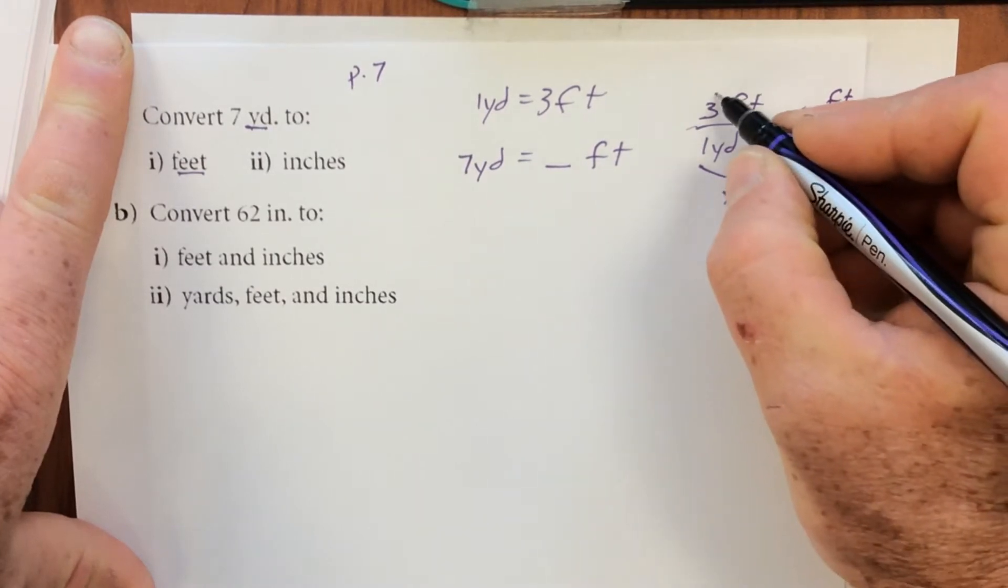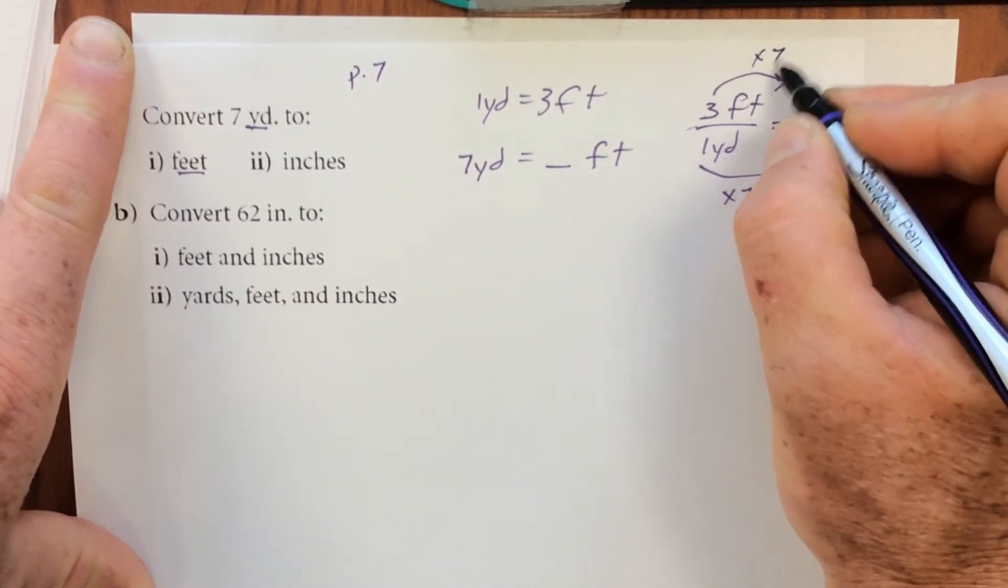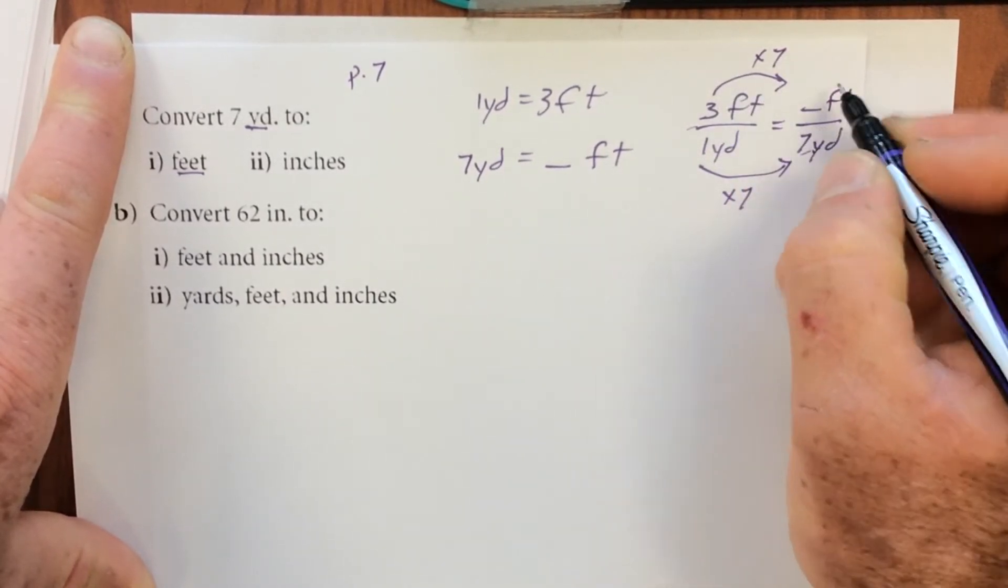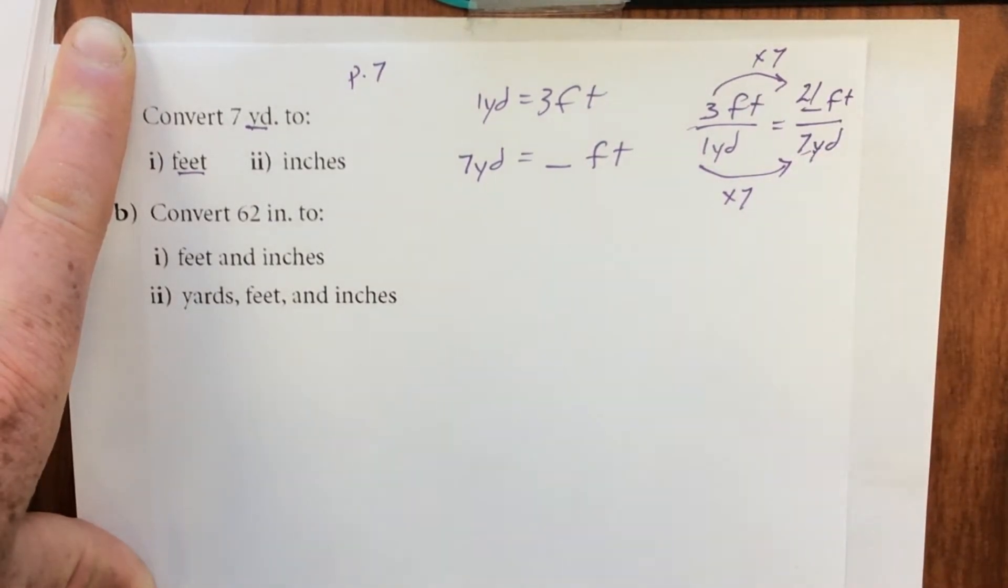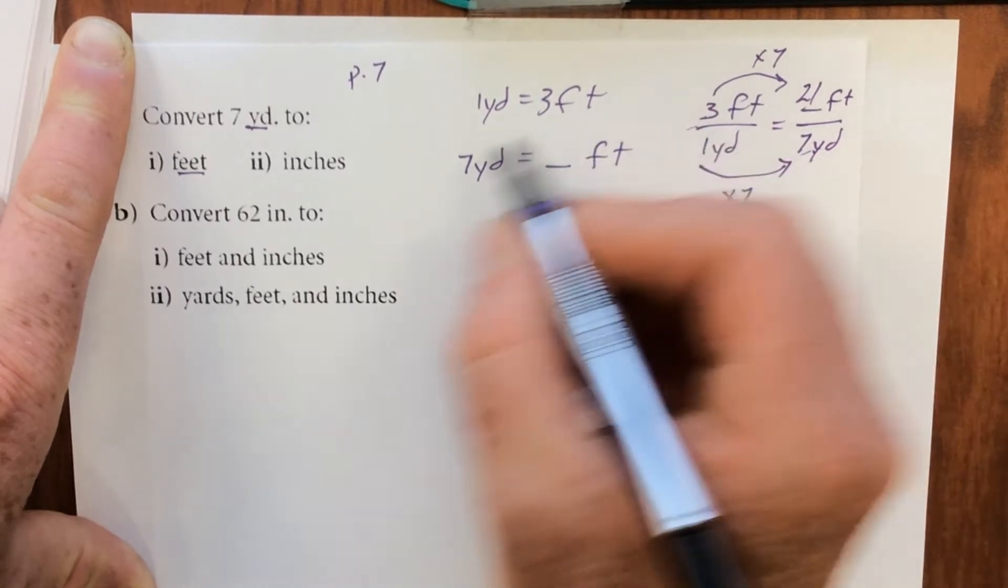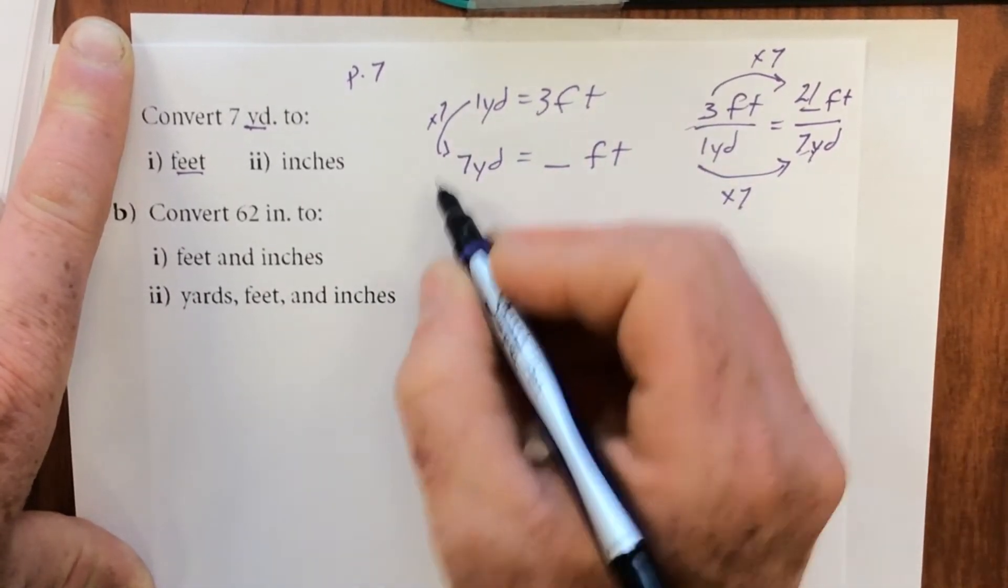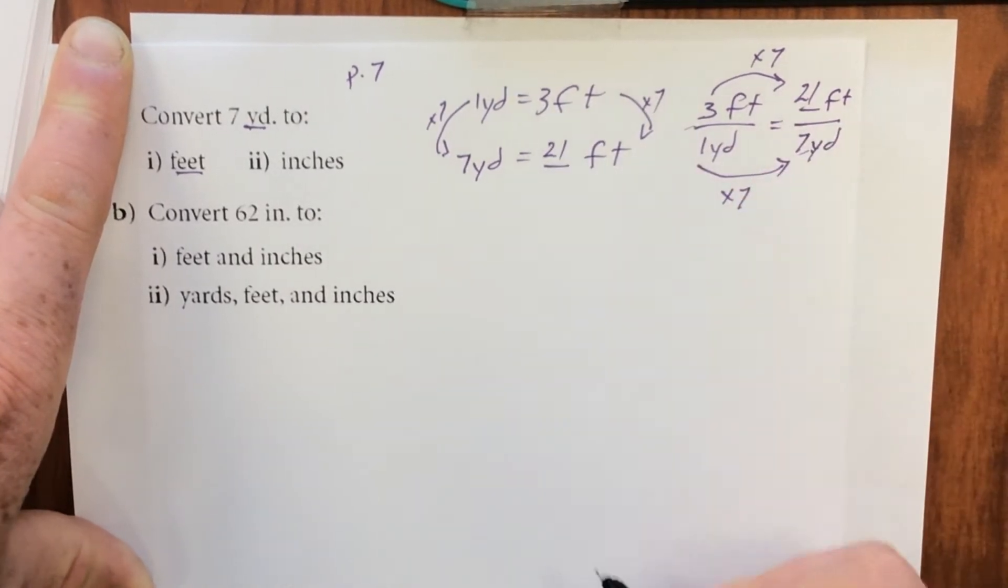So that means three will get multiplied by seven. Whenever I multiply the bottom to get this number, I multiply the top to get the top side. So that means I'm going to have 21 feet. So same way, you can look at it this way. One yard to seven yards. There's seven of them. So times seven, 21 feet.